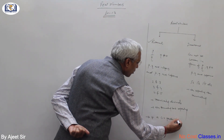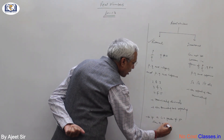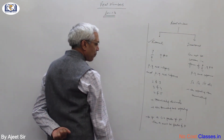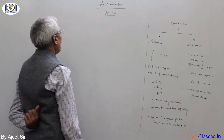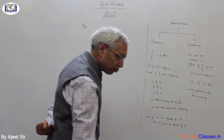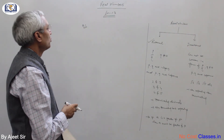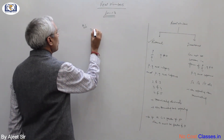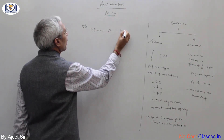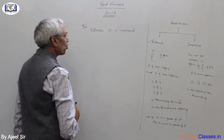A theorem is given: if a is a factor of p squared, then a must be a factor of p. Now we start question number one. We have to prove that root 5 is irrational. To prove root 5 is irrational, we will use the contradictory method.